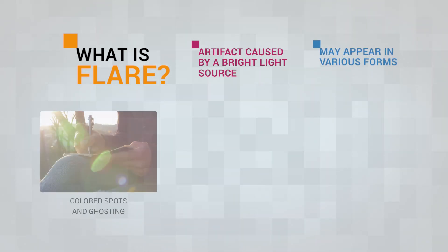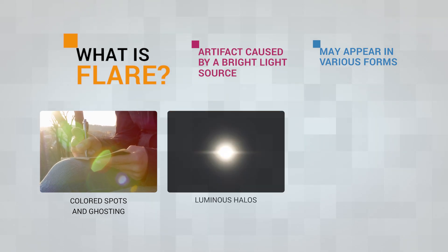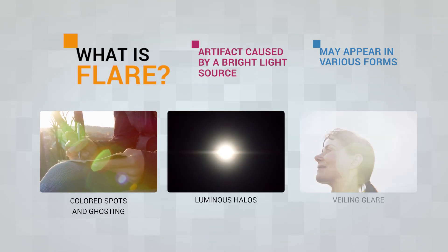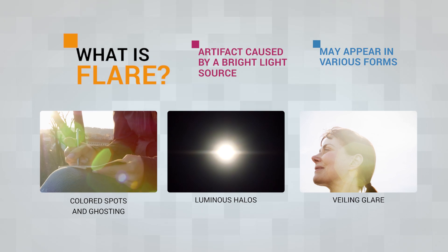We define flare or stray light as an unwanted artifact caused by a very bright light source like the Sun. It may appear in various forms in the image as colored spots, ghosting, luminous halos, haze, or a veiling glare that reduces the contrast and color saturation in the picture.